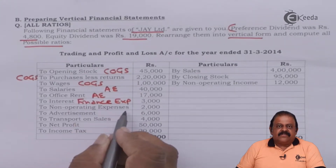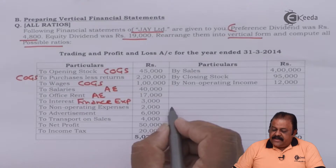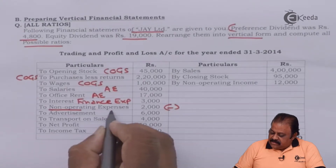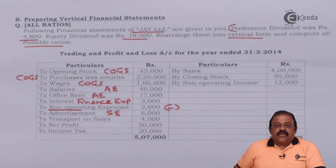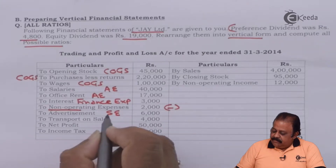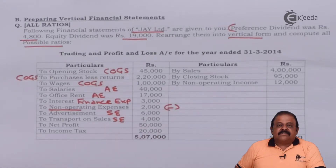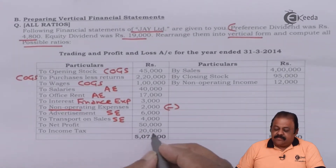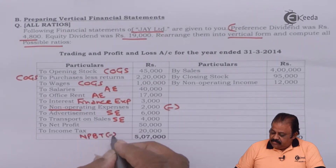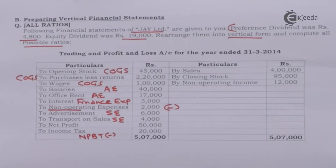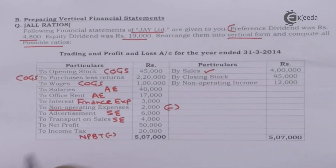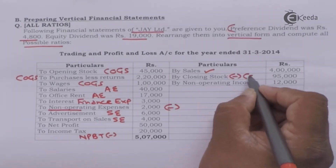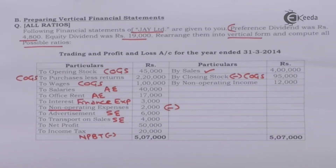Interest is a non-operating expense to be deducted from operating net profit. Advertisement, selling expenses, transport on sales, and carriage outwards are selling expenses. Net profit is given along with income tax of 20,000. Sales will be the first item of the income statement, and closing stock will be deducted while calculating cost of goods sold.